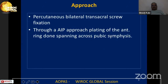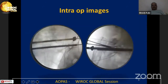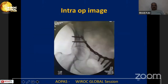Our approach was percutaneous bilateral trans-sacral screw fixation, along with an anterior intrapelvic approach for plating of the anterior ring, spanning across the pubic symphysis. In the intra-operative images, two sacral screws were placed — both trans-sacral fixations. We then extended the plate quite high up on the right side to cross the pubic symphysis, because the patient had a bilateral superior rami fracture.